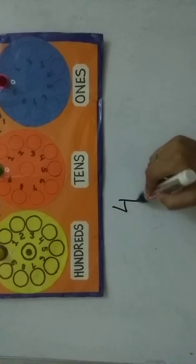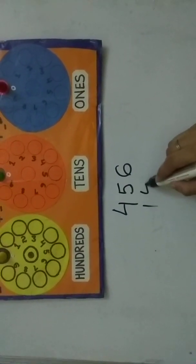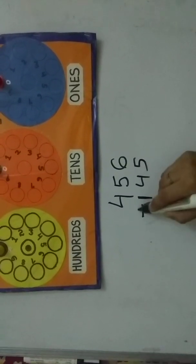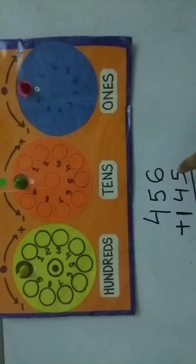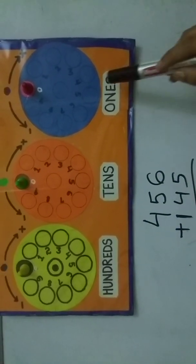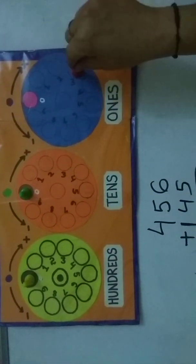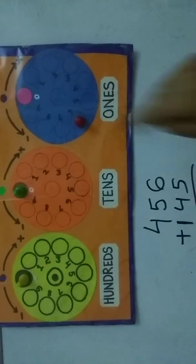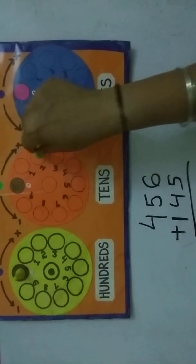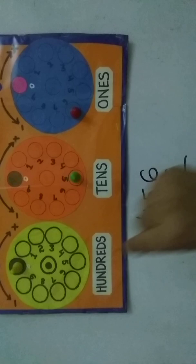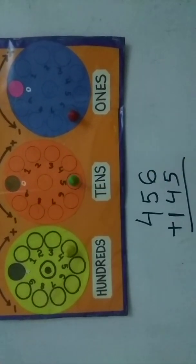Let's take the three-digit number 456 and add it to 145. We start with the ones place — placing digit six on the ones position and moving six steps ahead: one, two, three, four, five, six. Now for the tens place, digit five: one, two, three, four, five. Then for the hundreds place, digit four: one, two, three, four.